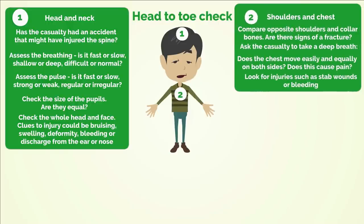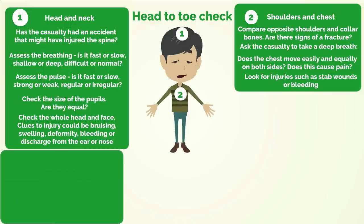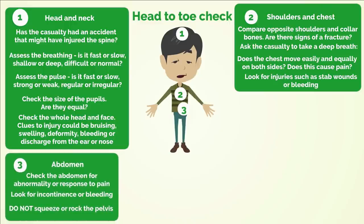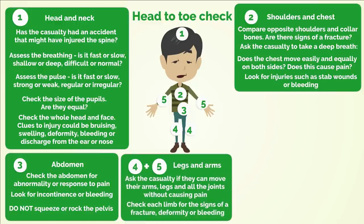Number 2 — Shoulders and chest: compare opposite shoulders and collarbones — are there signs of a fracture? Ask the casualty to take a deep breath — does the chest move easily and equally on both sides? Does this cause pain? Look for injuries such as stab wounds or bleeding. Number 3 — Abdomen: check the abdomen for abnormality or response to pain, look for incontinence or bleeding, and do not squeeze or rock the pelvis. Numbers 4 and 5 — Legs and arms: ask the casualty if they can move their arms, legs and all joints without causing pain. Check each limb for signs of a fracture, deformity or bleeding.